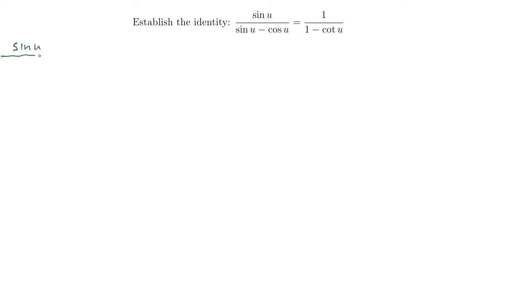First, you write down that side. Sine u over sine u minus cosine u. Now, I know I am looking to get a 1 in the numerator. So it would be very nice to be able to divide the numerator by sine of u. If I divide the top of the fraction by sine of u, I also have to divide the bottom of the fraction by sine of u so I don't change its value. But let's try that. So I'm just going to multiply top and bottom of this fraction by 1 over sine u. 1 over sine u.